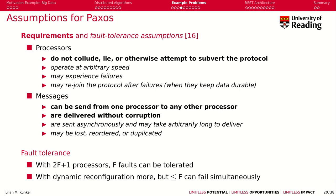Paxos comes with a couple of assumptions. First, the processors do not lie or attempt to subvert the protocol. However, they can operate at arbitrary speeds — someone can be faster or slower to make a decision. They can experience failures, and after experiencing a failure they can rejoin and still come to the same conclusion.